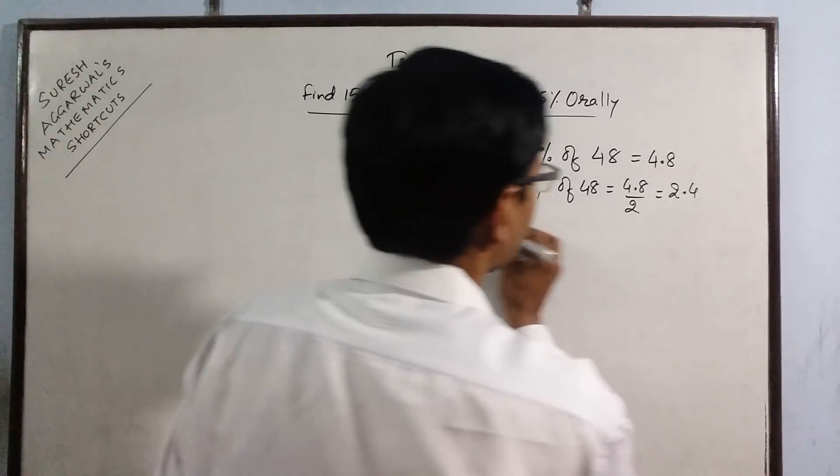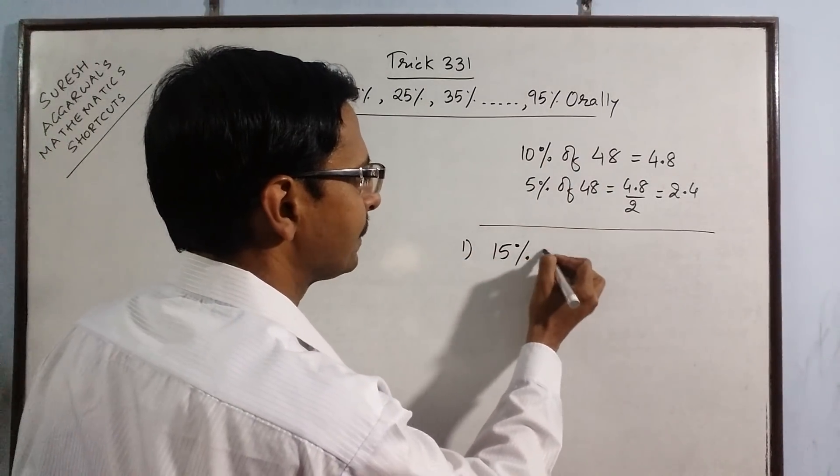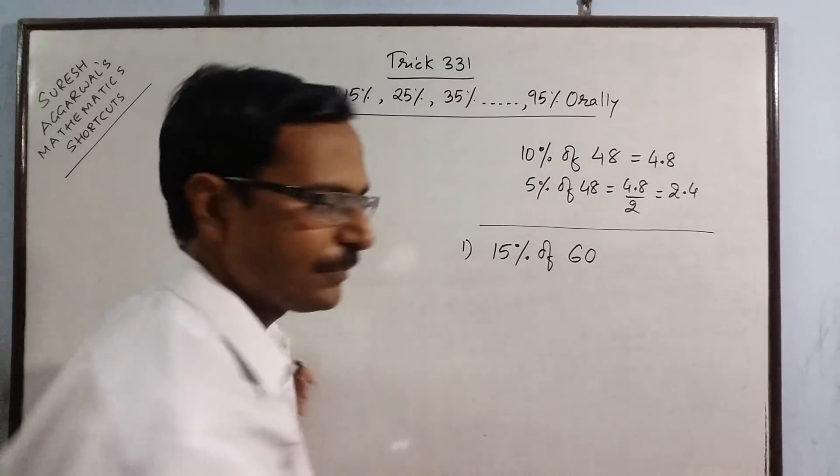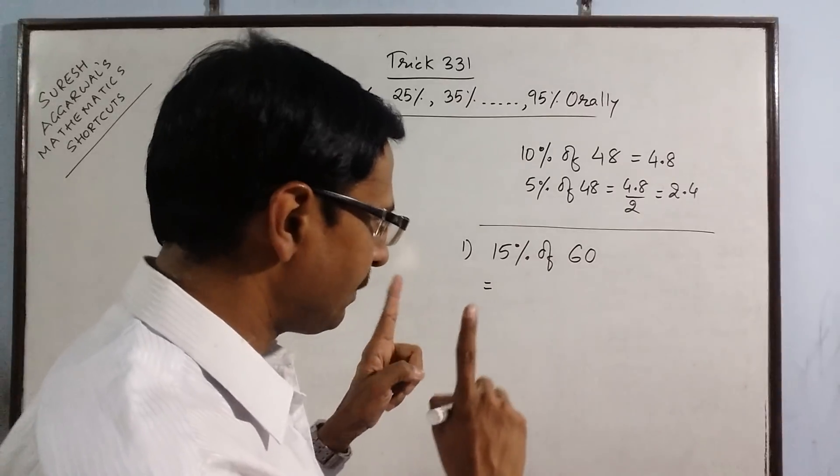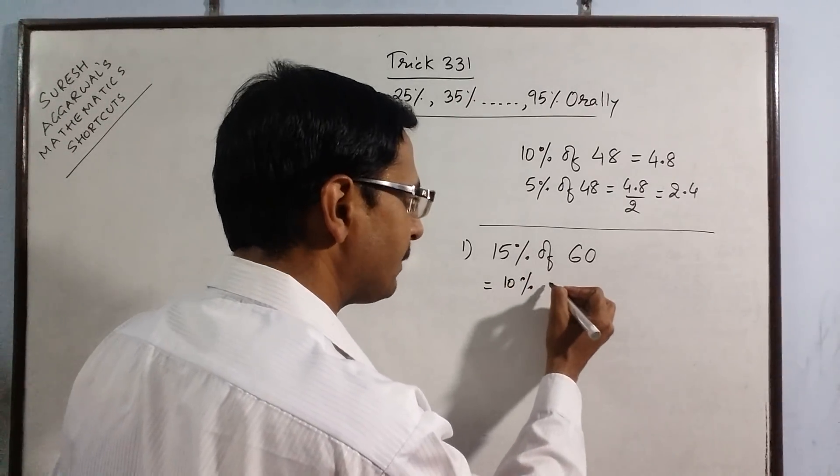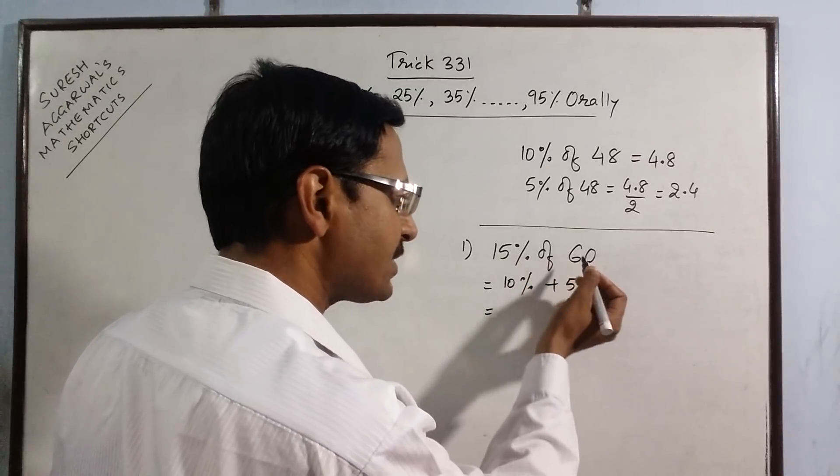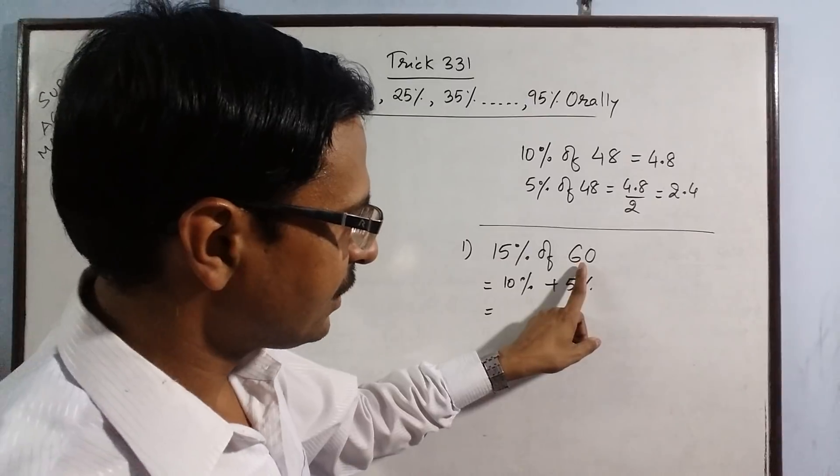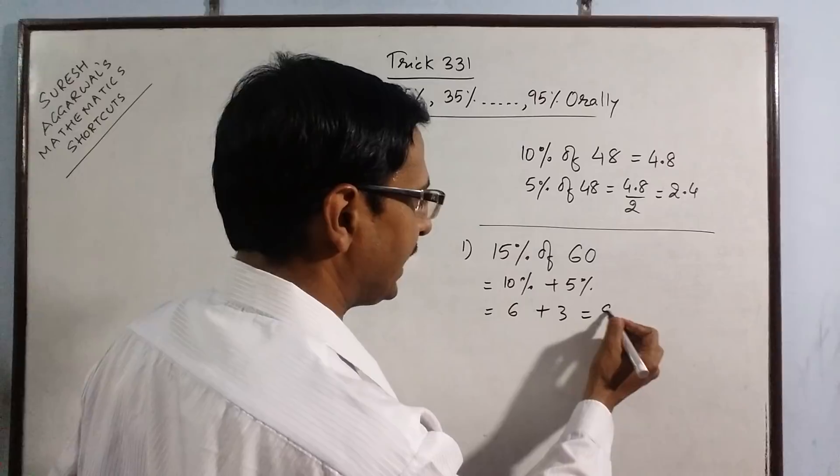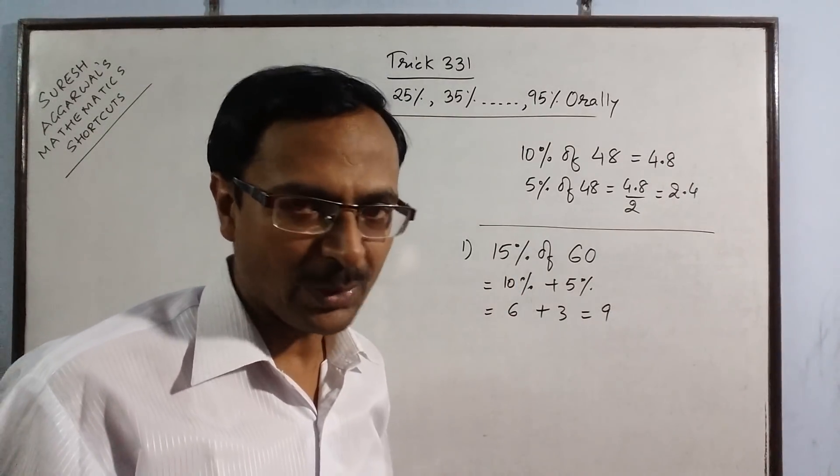Now let us take some examples. Suppose we have 15% of a number, I will take easy number first, 60. Now see, 10% plus 5%. So 10% plus 5% is 15%. What is 10%? One digit from the right side, so this becomes 6 and half of 6 is 3. So 9 is 15% of 60. Very easy isn't it?